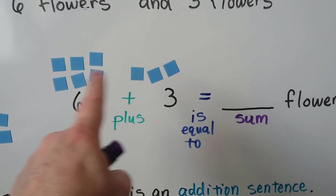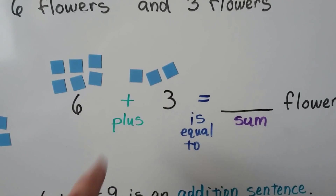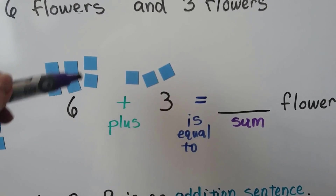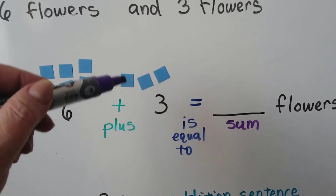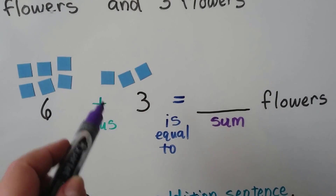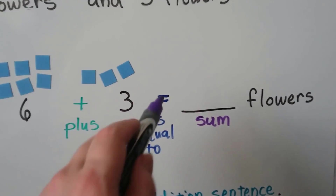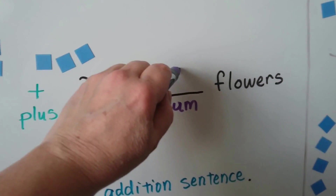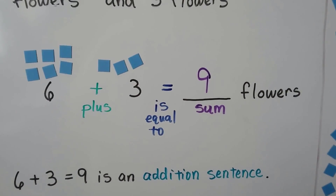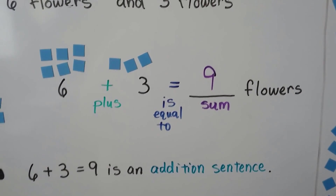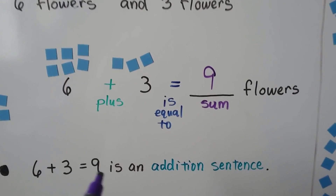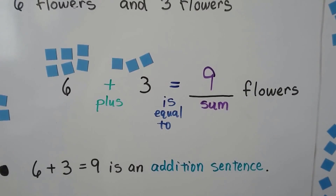We add these all up together: one, two, three, four, five, six, seven, eight, nine. Six plus three is equal to nine — nine flowers. Six plus three equals nine is an addition sentence.